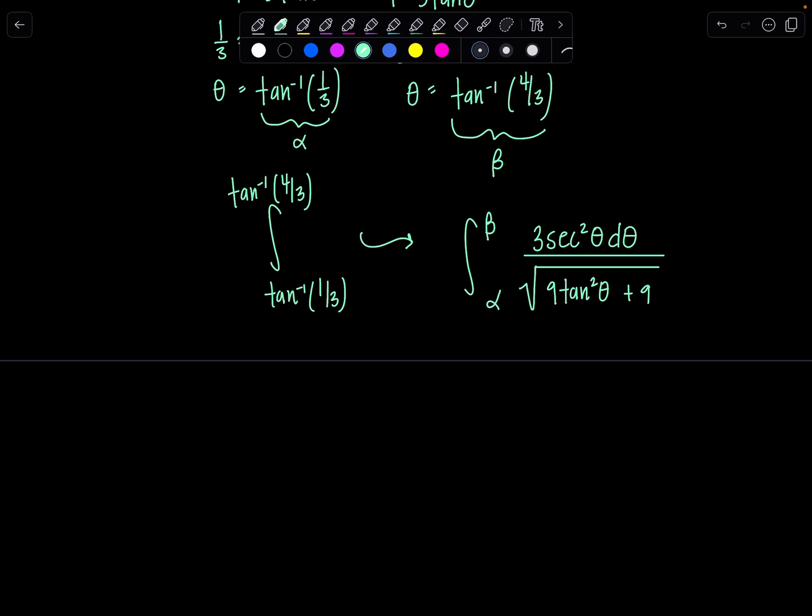From here, let's clean up the integrand. We've got 3 secant squared theta d theta over, and then this is square root 9 times tangent squared theta plus 1. Tangent squared theta plus 1, that's just secant squared theta, and then I've got this 9 here, and all of that is underneath the radical. So when we take square root of 9 secant squared theta, technically that's 3 absolute value of secant theta.